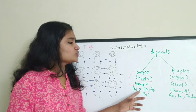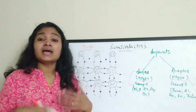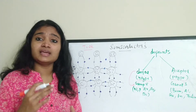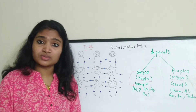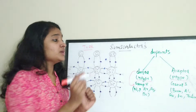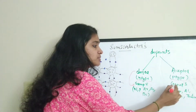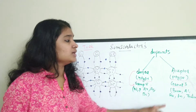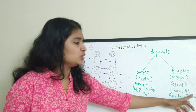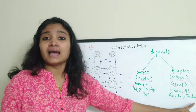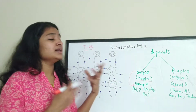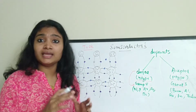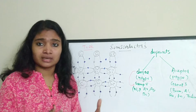Group 5 elements are nitrogen, phosphorus, arsenic, antimony, and bismuth. They are called Group 5 elements because they have 5 electrons in their outer shell. Acceptor impurities are Group 3 elements in the periodic table: boron, aluminium, gallium, indium, and thallium. They are called Group 3 elements because they have only 3 electrons in their outer shell.